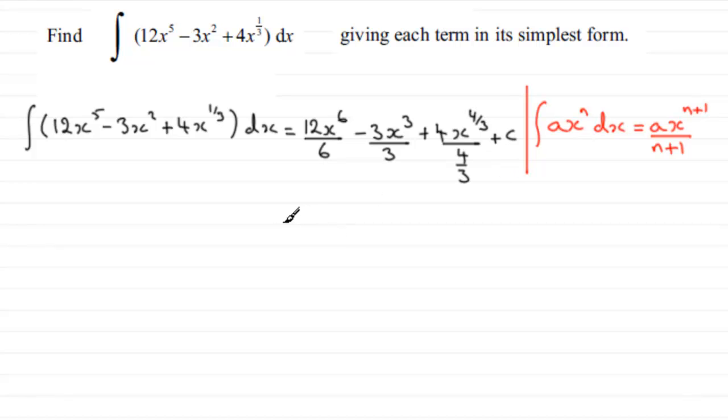Now we need to simplify these terms. For the first one, 6 cancels into 12 twice, so we get 2x to the power of 6. For the second term, 3 goes into 3 once, giving us minus x cubed.